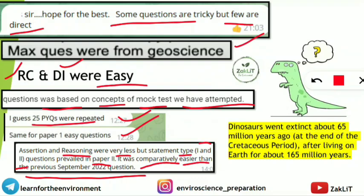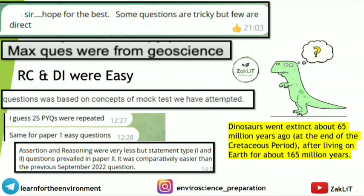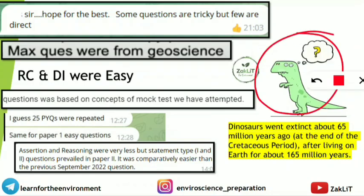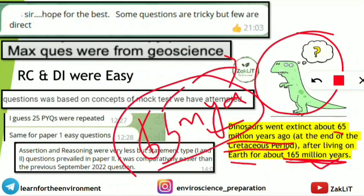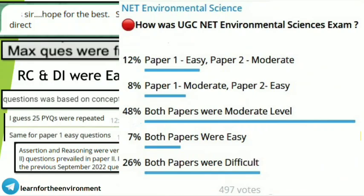Many candidates were confused by the dinosaur question in the reading comprehension of Paper 2, which asked how many million years ago dinosaurs went extinct. Dinosaurs went extinct about 65 million years ago at the end of the Cretaceous period. However, they lived on Earth for approximately 165 million years before their extinction.